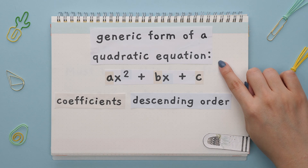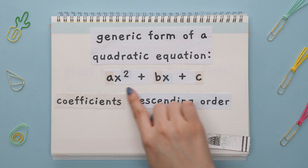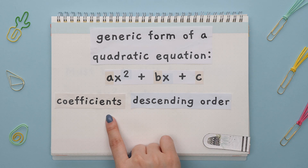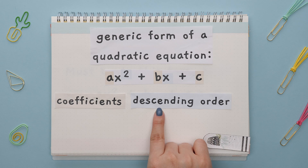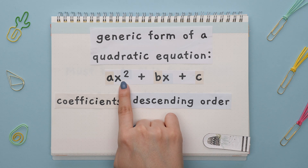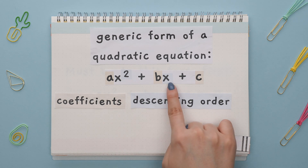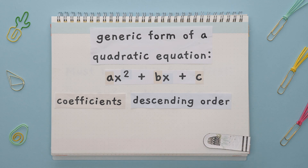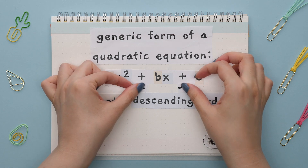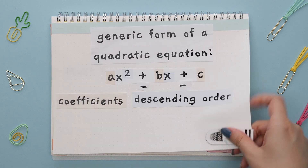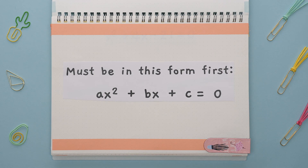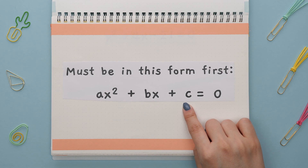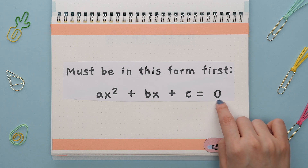The generic form of a quadratic equation looks like this, where a, b, and c are coefficients, and the variable's powers are in descending order, meaning it will always start with x squared, then x is in the middle, and the last term is just a number. These signs can change. All terms need to be in this descending order and set equal to zero.